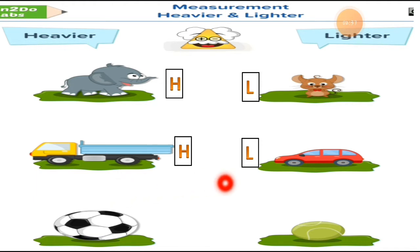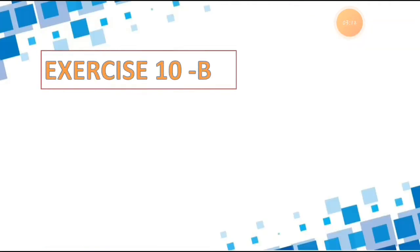Now here are two balls — one is a basketball and one is a tennis ball. If you compare these two balls, the basketball is the heavier one, so write H for heavier. The tennis ball — the one children play cricket with — is the lighter ball, so write L.